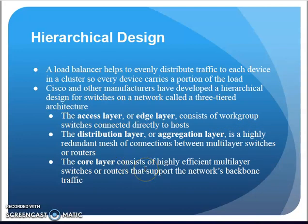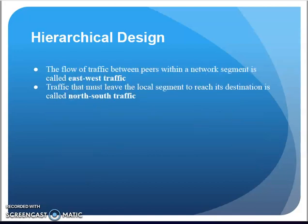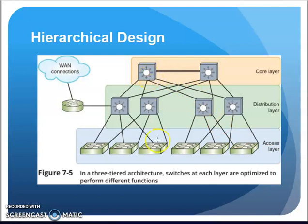The core layer — if distribution is layer three, this might be a layer four switch or an actual router providing backbone traffic. It moves traffic between entire buildings, parts of campus, or even between sites — for example, from a Harrisburg office to a Mechanicsburg office. This is the typical network structure and model for how we implement and connect devices.